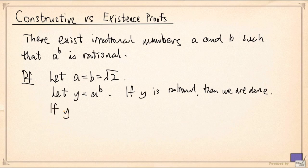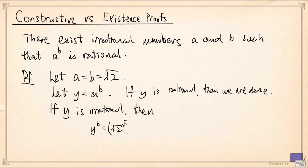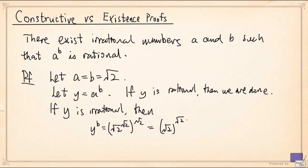But if y is irrational, then y^b = ((√2)^√2)^√2. And by the law of exponents, this is √2^(√2 × √2) = (√2)^2 = 2.